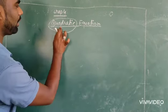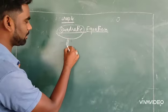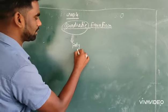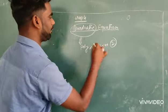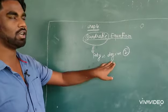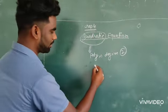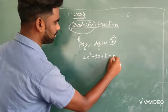First of all, we will understand what is called quadratic equation. Quadratic equation is a polynomial with degree 2. The definition of quadratic equation is the polynomial having degree 2 is called quadratic equation. For example, 2x² + 9x + 8 = 0.